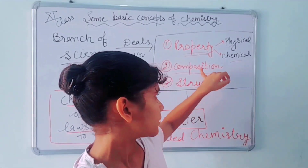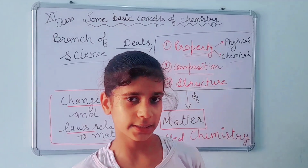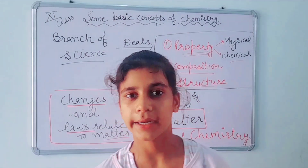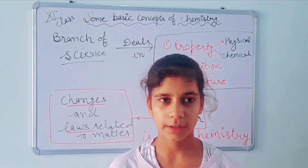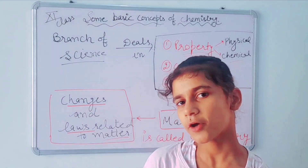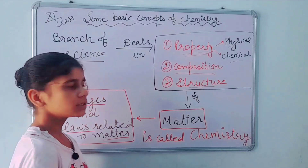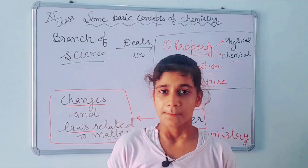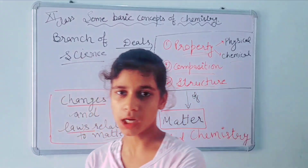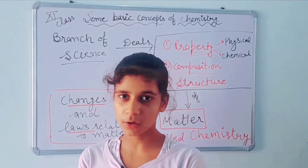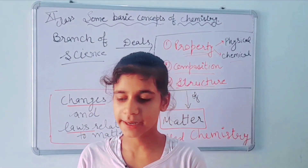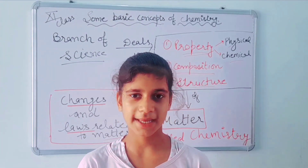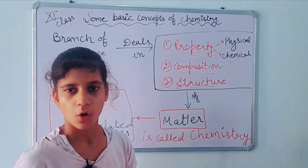For example, the composition of milk is that it has proteins, carbohydrates, minerals, etc. And the structure of milk means microscopic — what shape the atoms and proteins are in milk. That is known as the structure of matter.